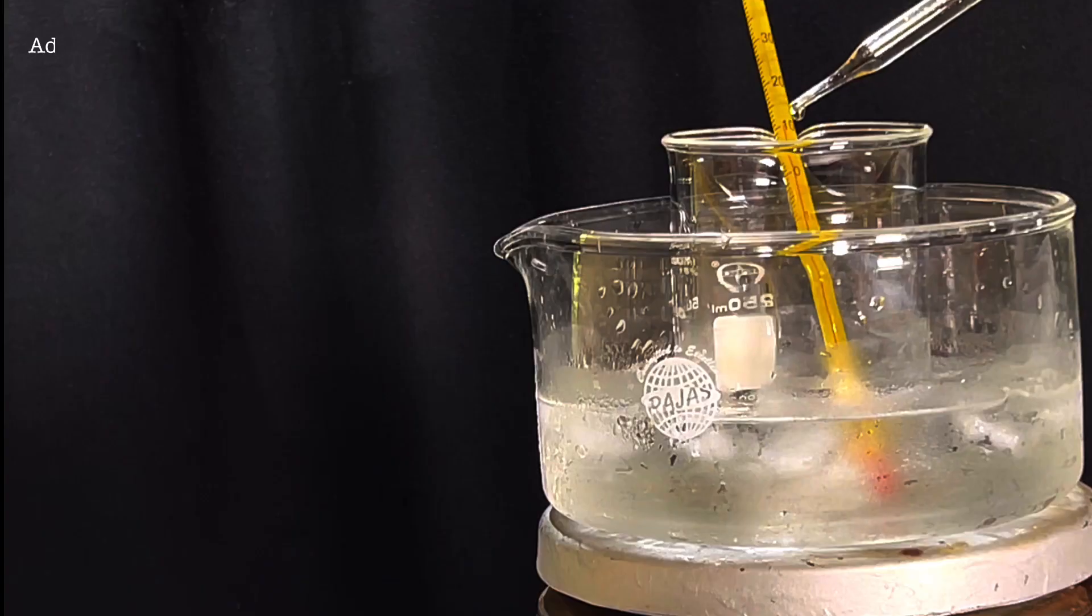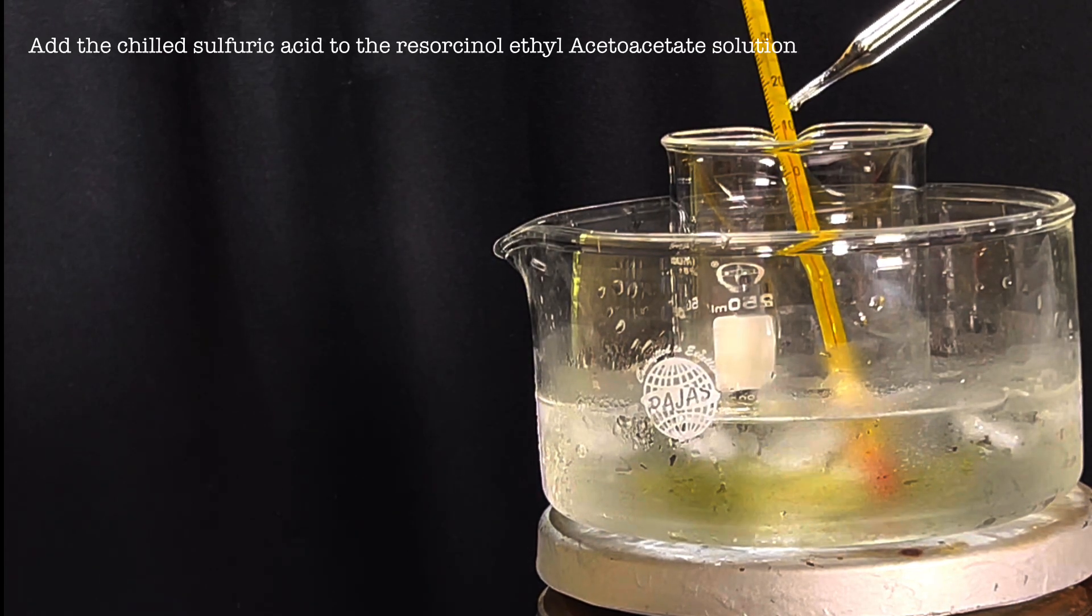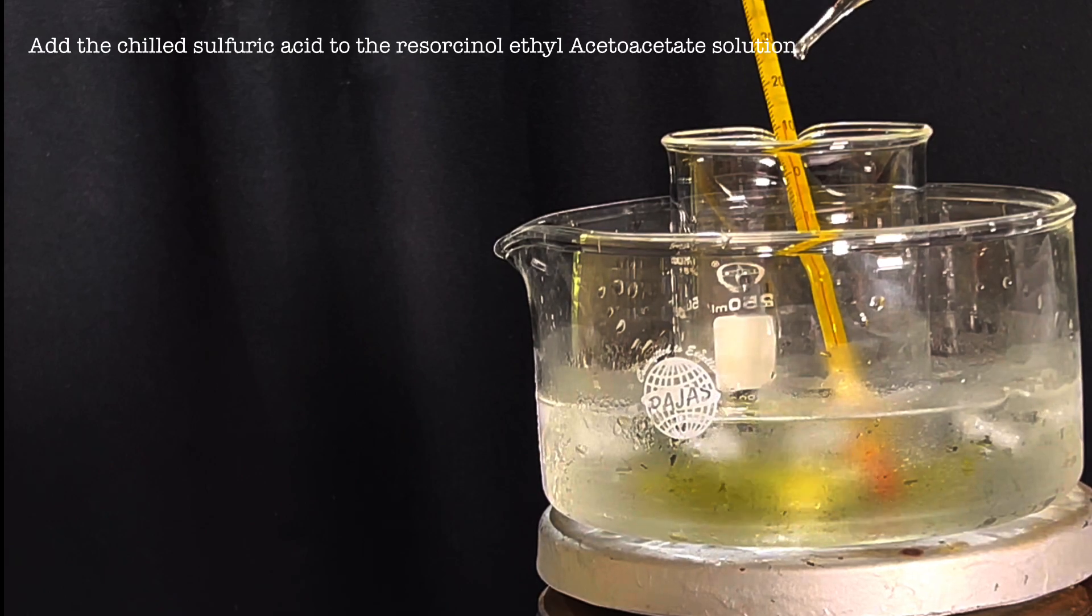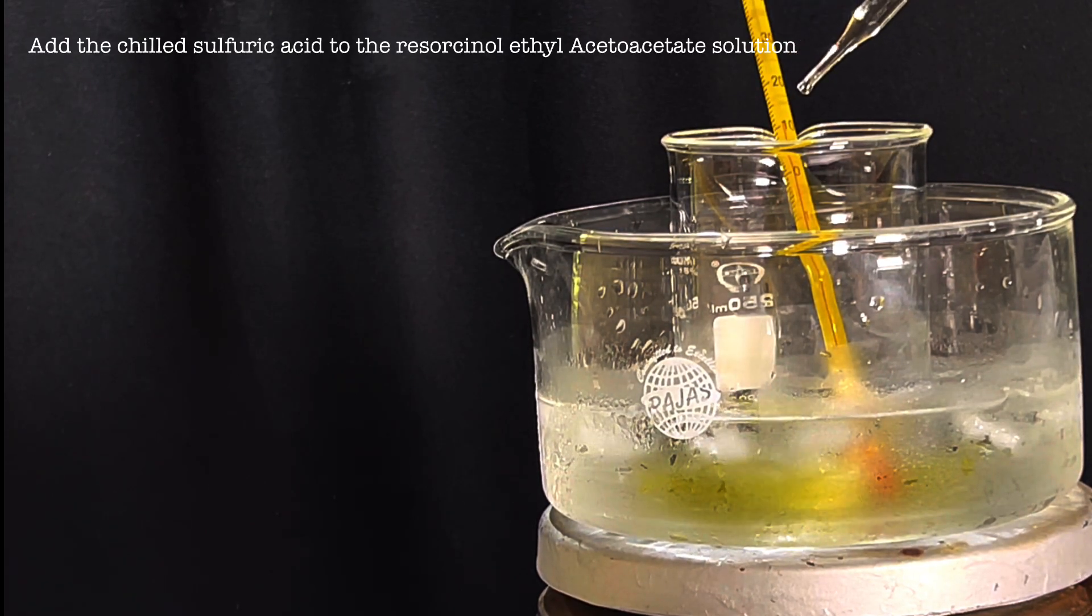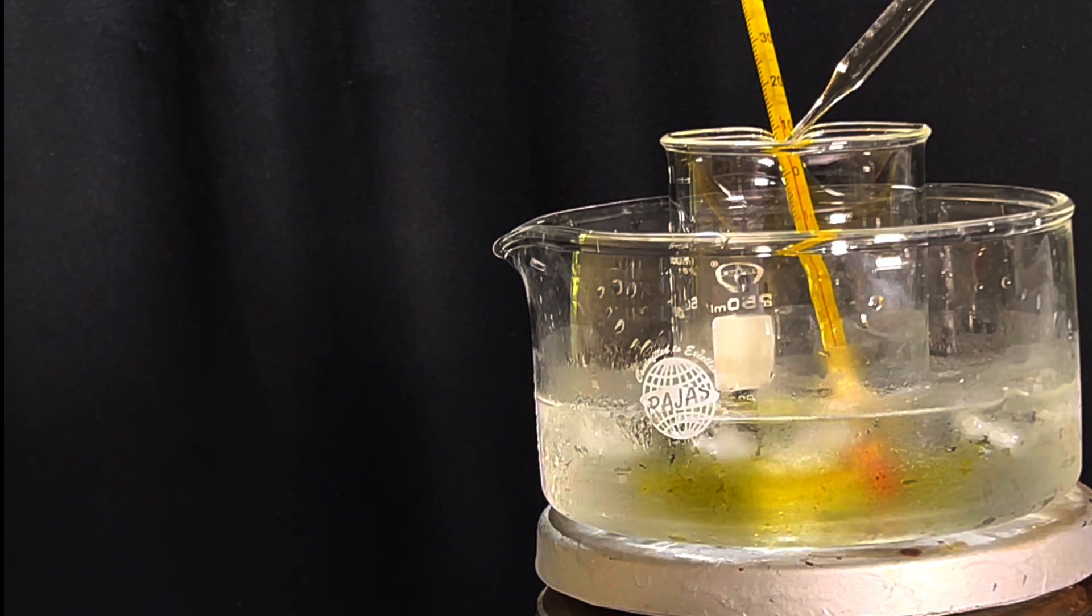Then the solution in the flask is added dropwise to the chilled sulfuric acid slowly using a glass pipette. Addition of resorcinol ethyl acetoacetate mixture to the sulfuric acid is exothermic. A thermometer was placed in the beaker and the temperature was maintained below 20 degrees C.